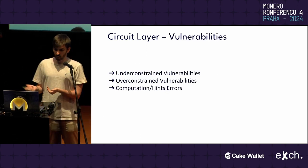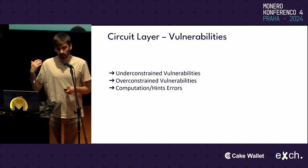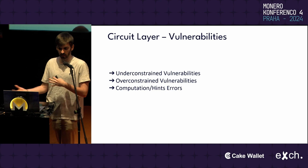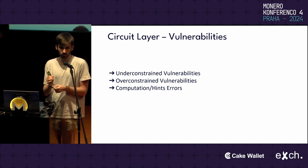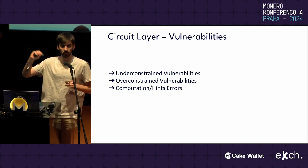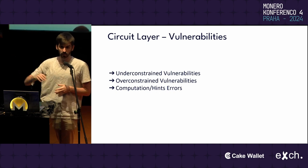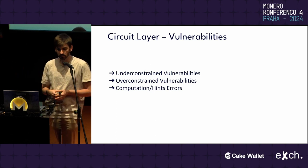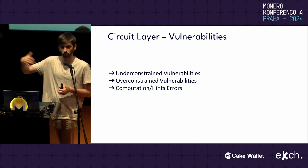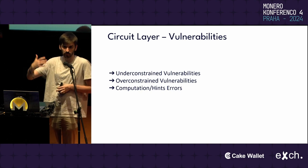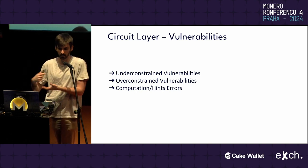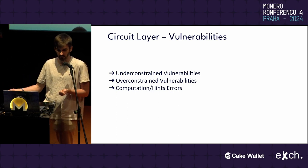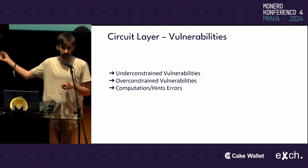What can go wrong in the circuit layer: we can have under-constrained vulnerabilities — somewhere we missed some constraint, so the prover can produce proofs of invalid statements. We can have over-constrained vulnerabilities — more constraints than intended, meaning we cannot produce a proof for some valid statements. And we can have computational errors, which are more on the logic side.